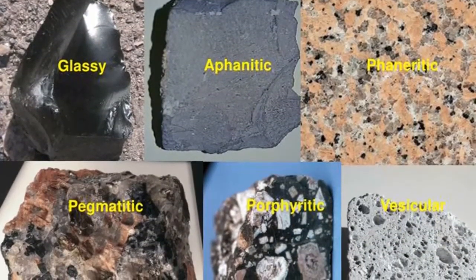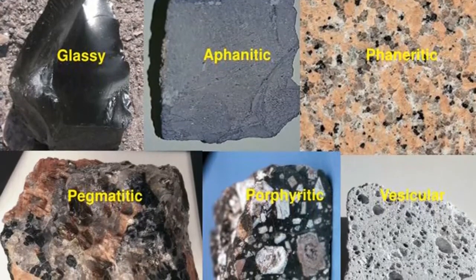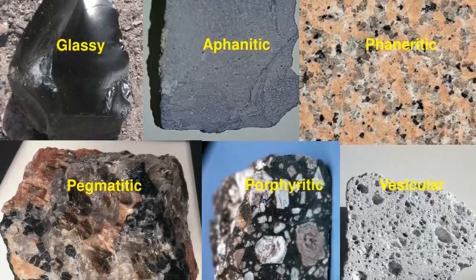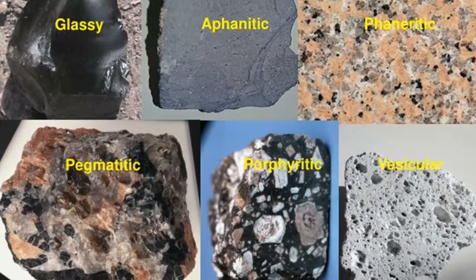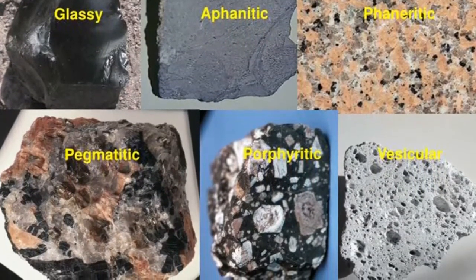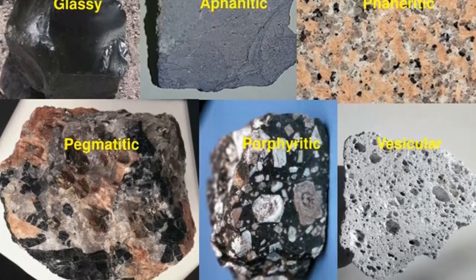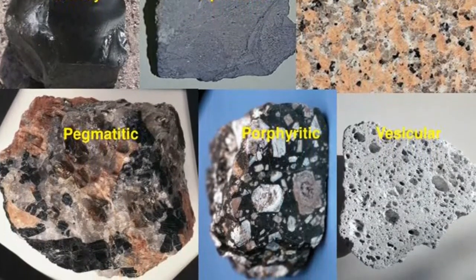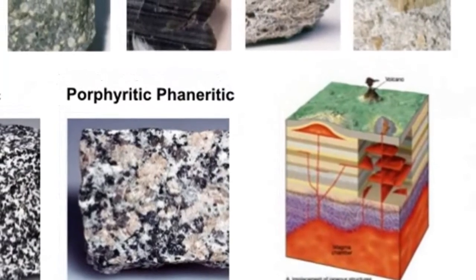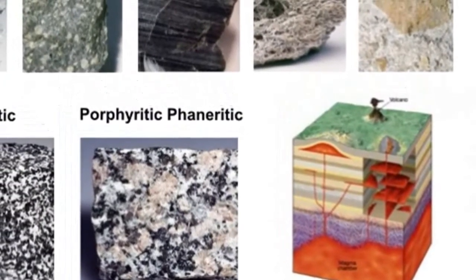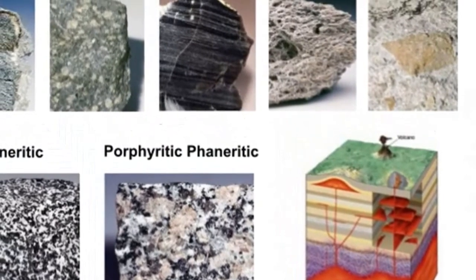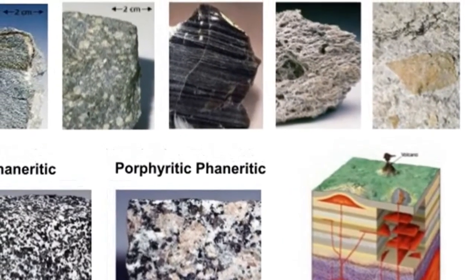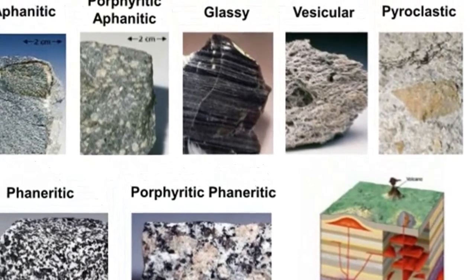Three factors contribute to the textures of igneous rocks: 1. The rate at which magma cools. 2. The amount of silica present, or mineral composition of the magma. 3. The amount of dissolved gases in the magma. Of these, the rate of cooling is the dominant factor.